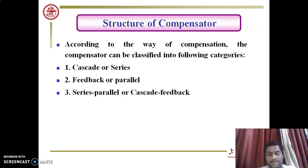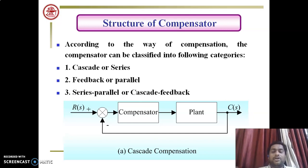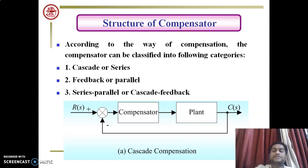The first type is the cascade compensator, also called a series compensator. Series or cascade compensators are always connected in series with the plant. The plant is the system which needs to be controlled, and it has its own transfer function — a gain applied to it.